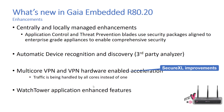The application control and threat prevention blades use security packages aligned to the enterprise-grade appliances to enable comprehensive security. There are also SecureXL improvements for multi-core VPN and VPN hardware-enabled acceleration.